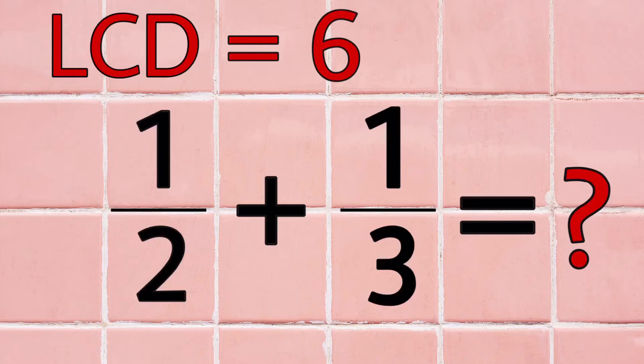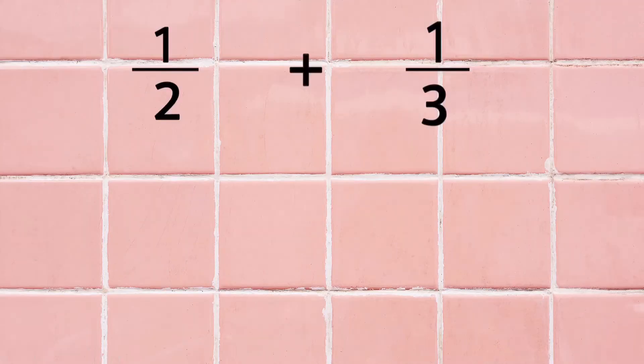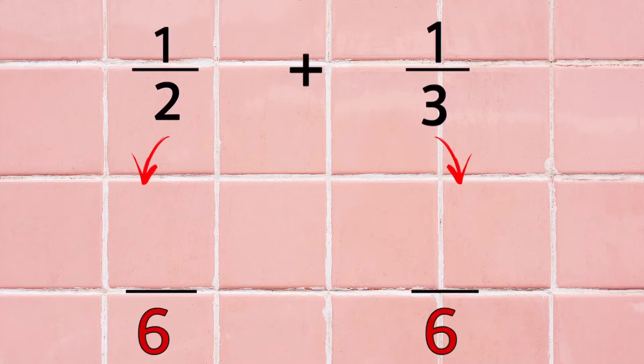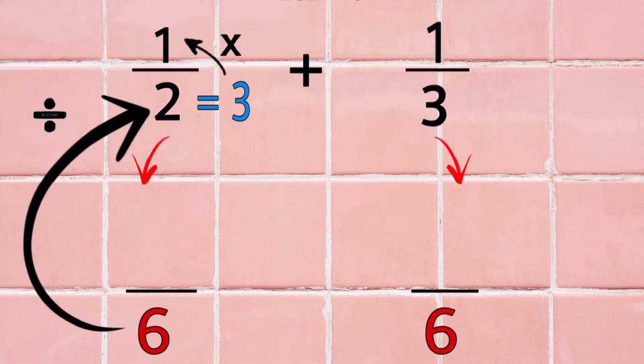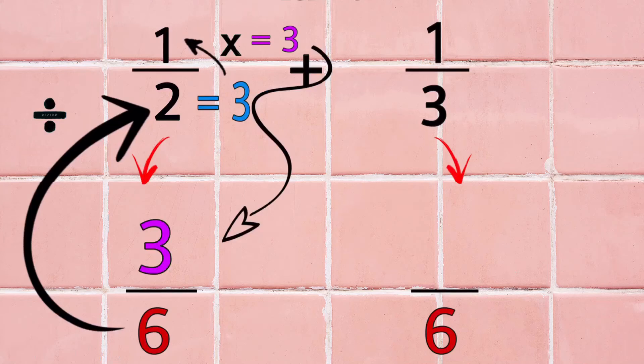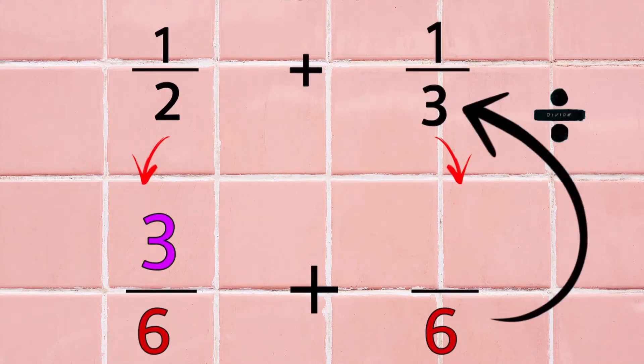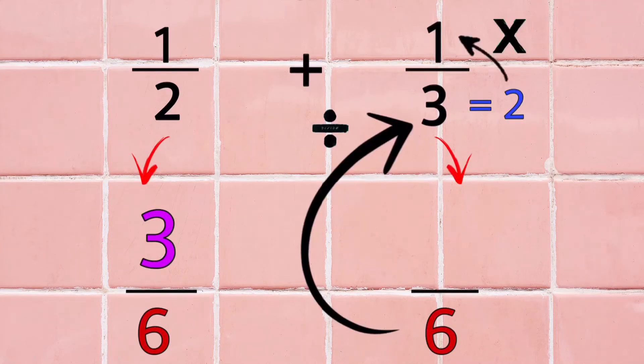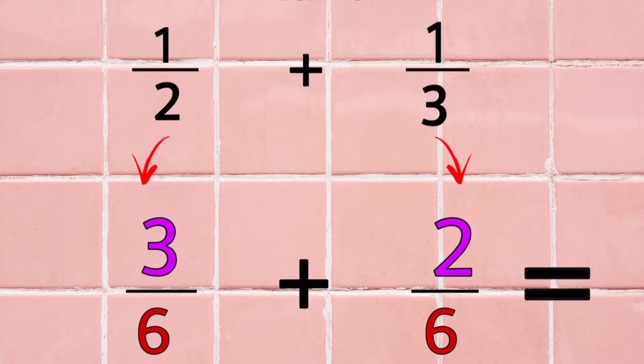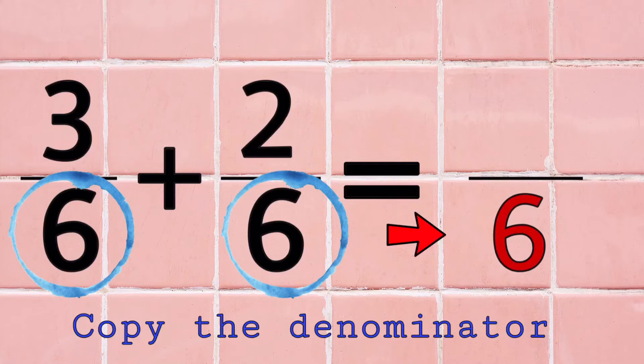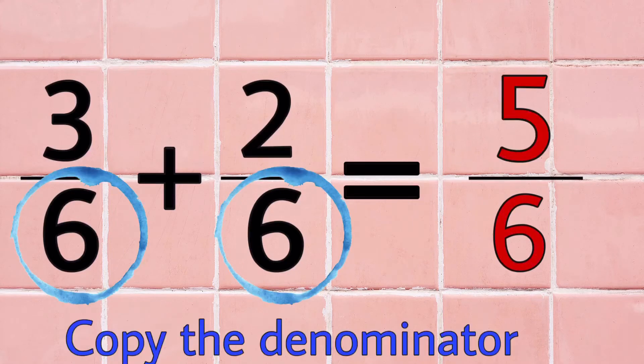To solve 1 half plus 1 third with the LCD 6 as the new denominator, making it similar this time. To find the missing numerators, let's begin with the first addends. 6 divided by 2 is 3. 3 times 1 equals 3. 6 divided by 3 is 2. 2 times 1 equals 2. Then, we add the numerators 3 plus 2 equals 5. Copy the denominator 6, making it 5 sixths.